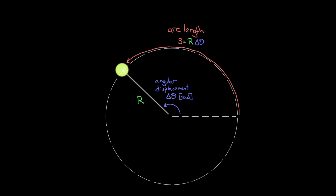This isn't miraculous — it works because of how the radian was defined. One radian is the angle through which you travel so that the arc length equals the radius of the circle. This was strategically defined so we get an easy conversion between angular displacement in radians and distance traveled in meters. The arc length has units of meters, as long as the radius is in meters.